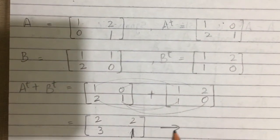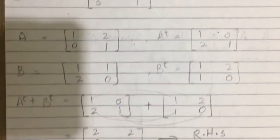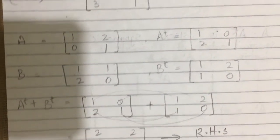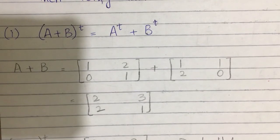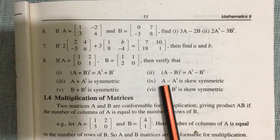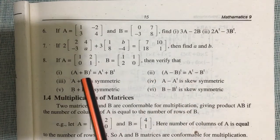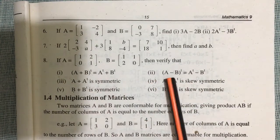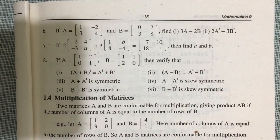This is the right hand side. Left hand side equals right hand side, hence it is proved that (A+B)^T = A^T + B^T. The second part is also the same: (A-B)^T = A^T - B^T, but here you subtract instead of add. The method is the same.